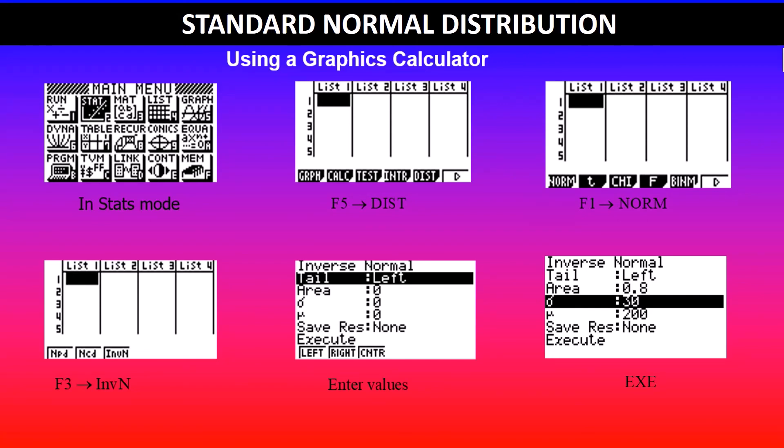In this case you can see I've used the area value 0.8, standard deviation 30, mean value of 200, which gives you 225.25 minutes. I hope this makes sense.